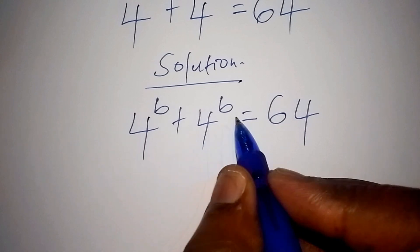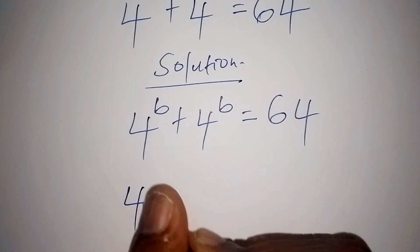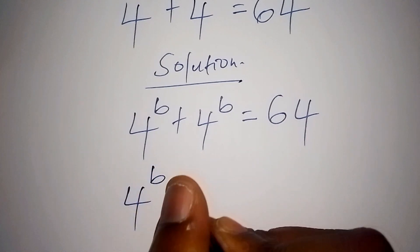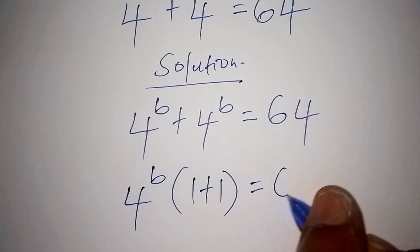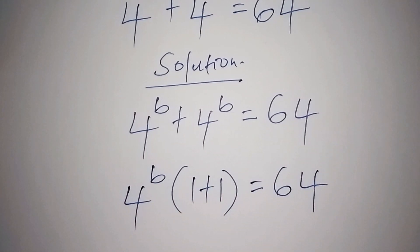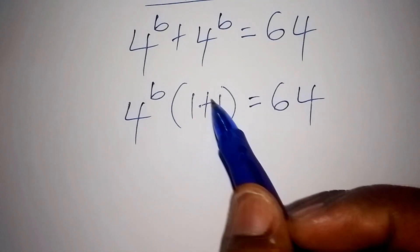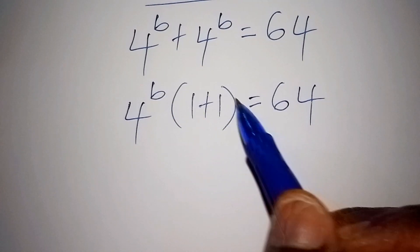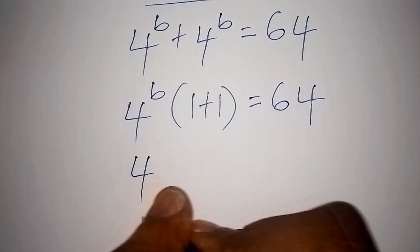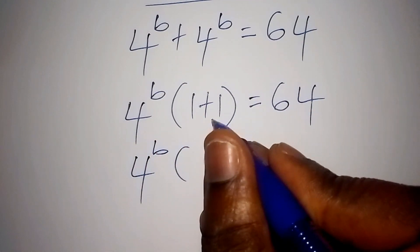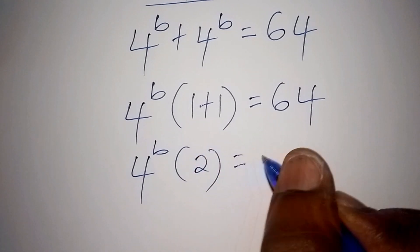Since 4 to the power of b and 4 to the power of b are common, let us now factorize. We shall have 4 to the power of b, then in bracket 1 plus 1, is equals to 64. When you work out the number inside the bracket, 1 plus 1 is 2, so 4 to the power of b times 2 is equals to 64.